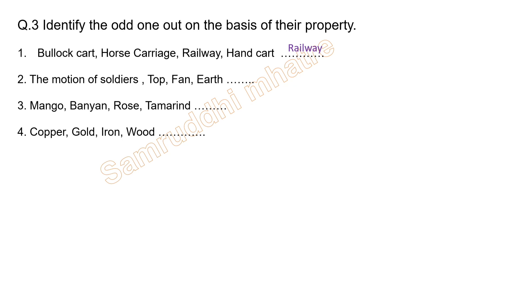Second group: motion of soldiers, stock, fan, and Earth. The soldiers' motion is linear, while the other options involve circular motion. So the odd one out is the motion of soldiers.